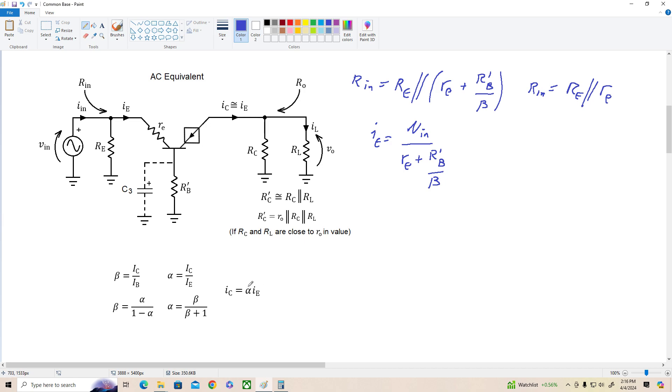So that's our emitter current, and the collector current is approximately equal. If we wanted to, we could say it's equal to alpha times Ie, but remember alpha is very close to 1, so let's just go with this approximation for now, and we get Vout is equal to Ic times R prime C, and that's the same as I sub E. So Vout is equal to RC times this, so it's R prime C times Vn divided by little re plus R prime B over beta.